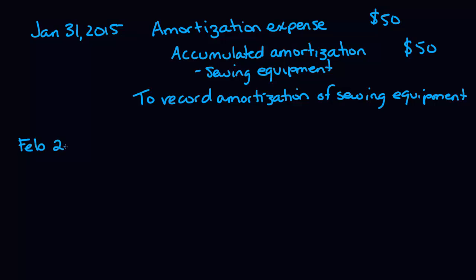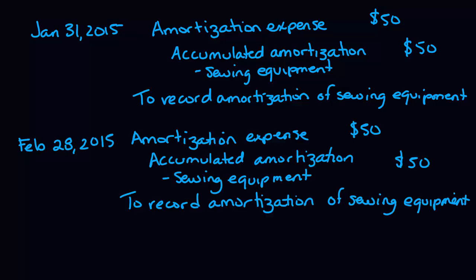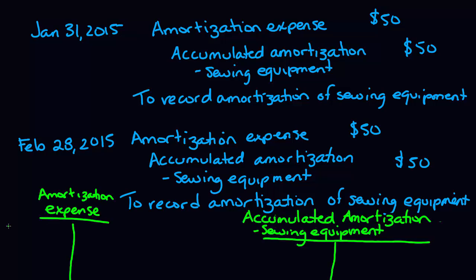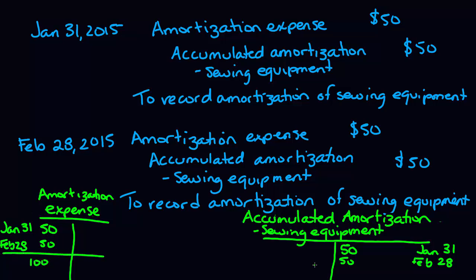Every single month we are going to make the exact same journal entry. So on February 28th, we're going to have the same journal entry. If we consider our T-accounts: amortization expense is debited by $50 and accumulated amortization sewing equipment is credited by $50. The same thing happens on February 28th, so in our expense account we have $100, and in our accumulated amortization account we have $100.